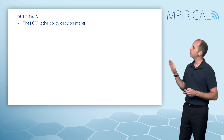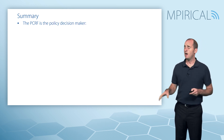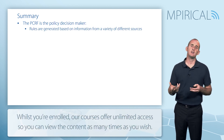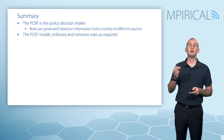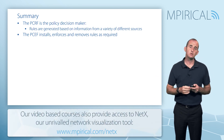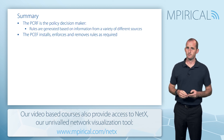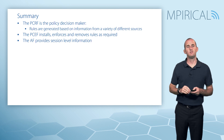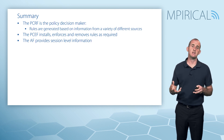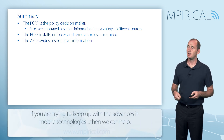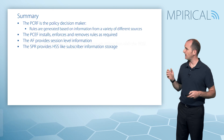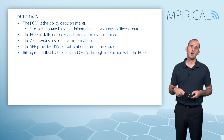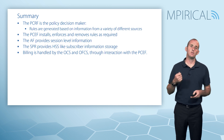In summary: the PCRF is the policy decision maker in the network and makes those decisions based on information provided by the SPR, the PCEF, and the application function. Based on that information, rules can be formulated and passed to the PCEF for enforcement — the PCEF must install the rule, enforce it, and remove it if necessary. The application function provides session level information, with the prime example being the proxy call session control function of the IMS. The SPR provides HSS-like subscriber information storage, and billing is handled by the online charging server and the offline charging server through interaction with the PCEF.